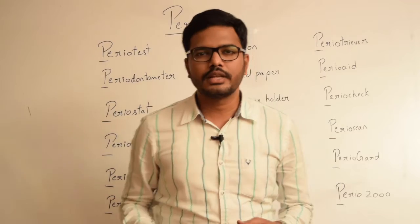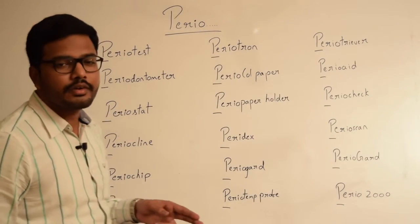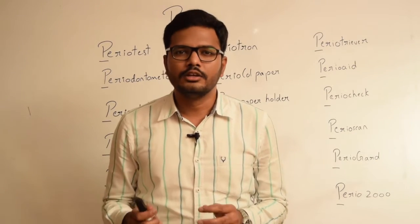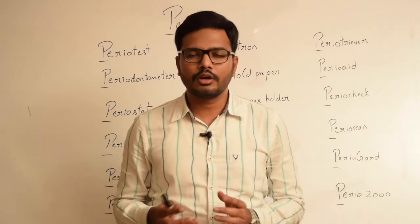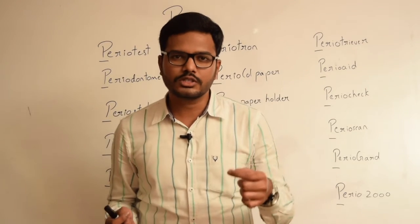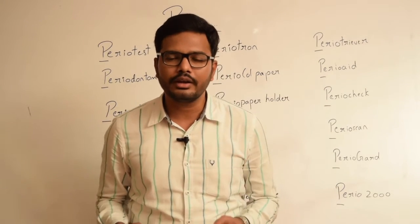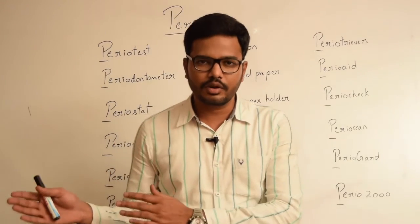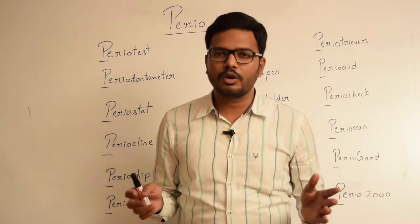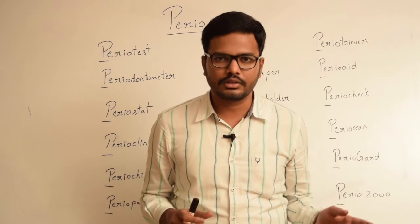Now coming to the next term, periochip. Periochip is used for local drug delivery and it contains 2.5mg of chlorhexidine. This chip is biodegradable and the overall weight of this chip is 7.4mg. When it is placed within the pocket, there is sustained release of chlorhexidine for a period of 7 days. Studies have shown that it eliminates almost 99% of pathologic bacteria existing in the area.